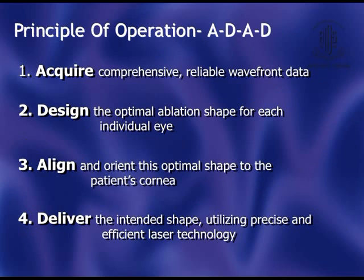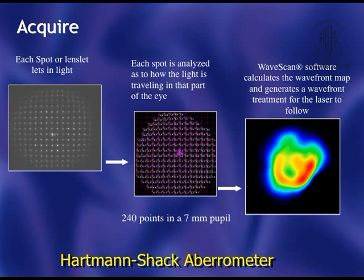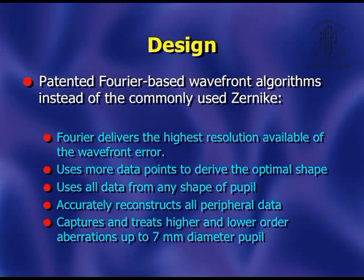In any machine that does a customized treatment, the general principle is acquire, design, align and then deliver. We have equipment or technology in use for each of these things. Acquisition is by wavefront aberrometer, which is based on a Hartmann-Shack aberrometer, and it acquires and creates a shape of the cornea and calculates the wavefront present in the cornea. An algorithm then calculates and creates a shape of the cornea which can be understood by the excimer machine, and then it suggests a shape which should be created by the excimer laser.